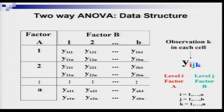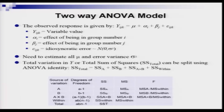We now revisit the model equation. An observed response Y_ijk can be broken down into four components: the grand mean μ, the effect αᵢ of being in group i (effect of factor A), the effect βⱼ of being in group j (effect of factor B), and the idiosyncratic error εᵢⱼₖ. We need to estimate all unknown population parameters — the means and the error variance σ².